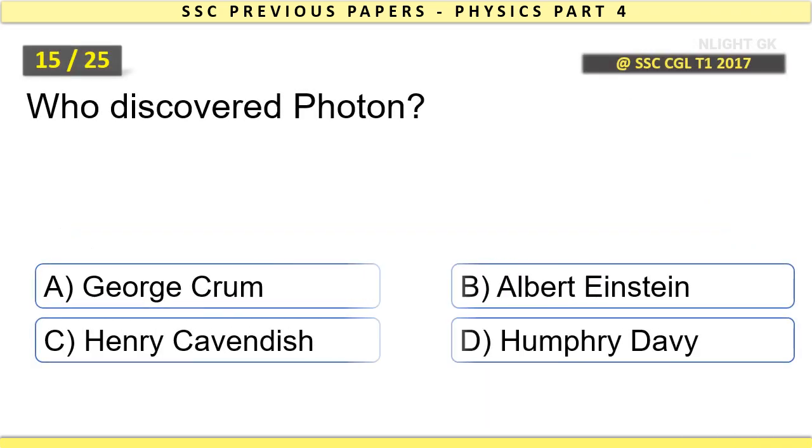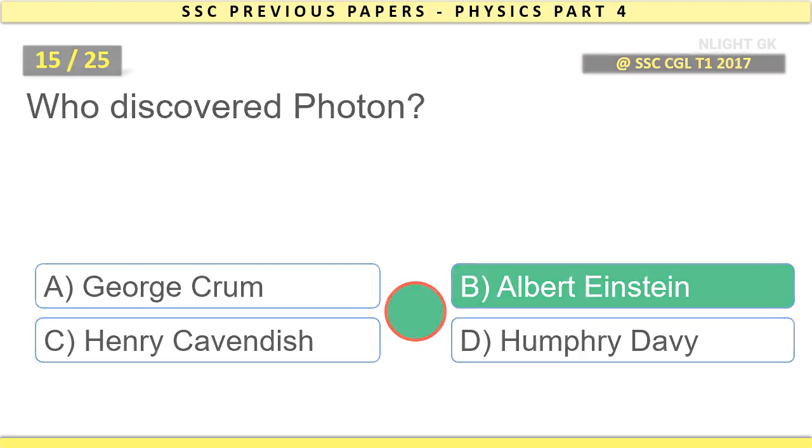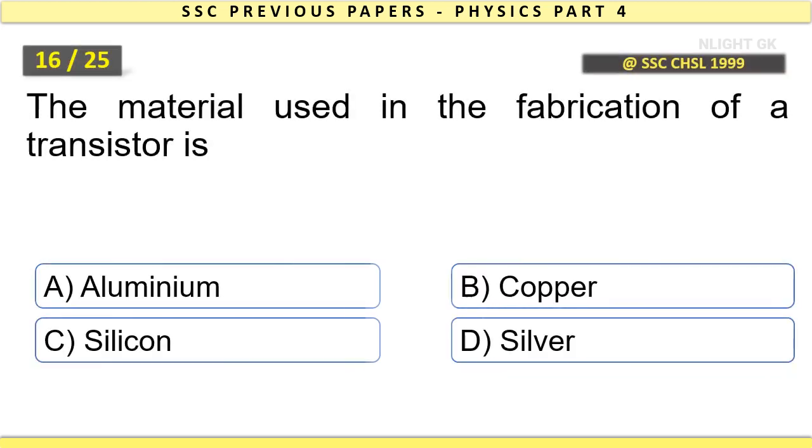Who discovered photon? Albert Einstein. The material used in the fabrication of a transistor is silicon.